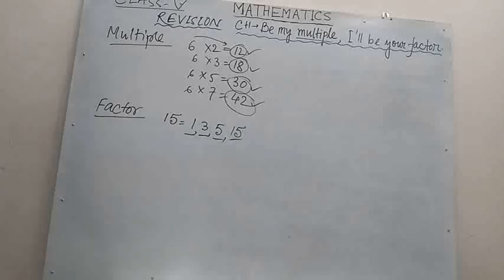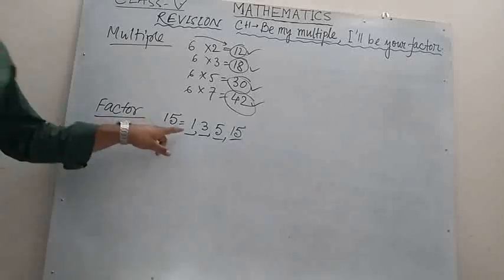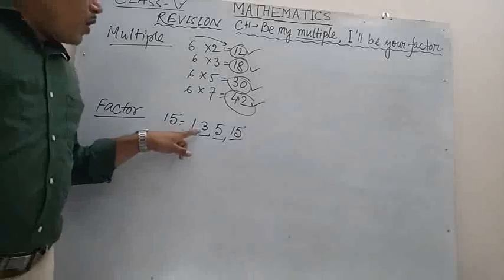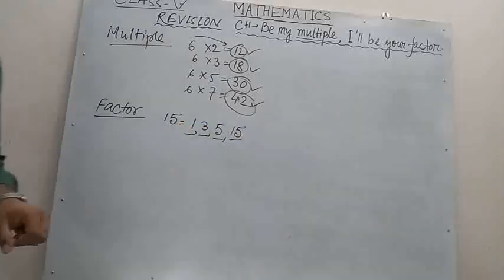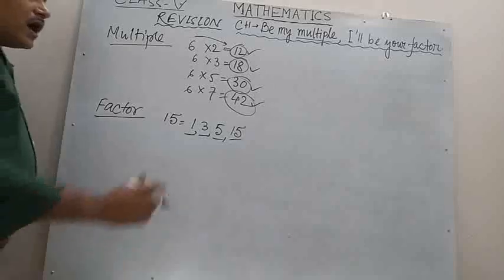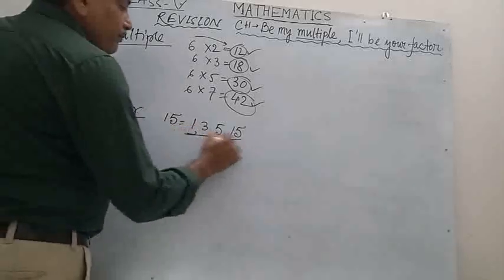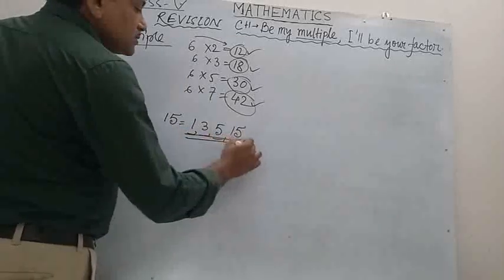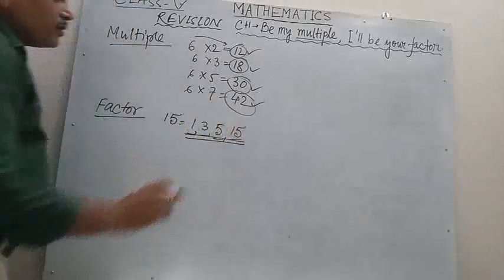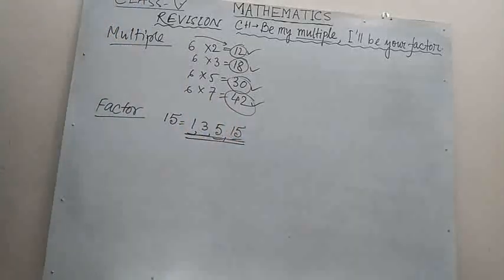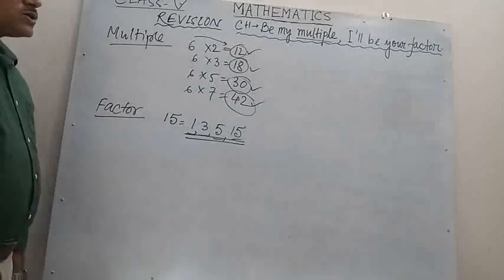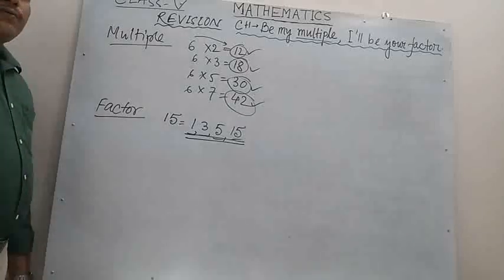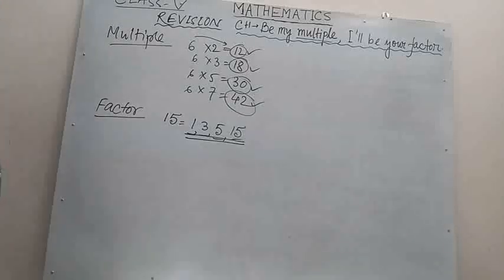That is, 15 is completely divisible by 1, 3, 5, and 15. So these are the factors of 15.